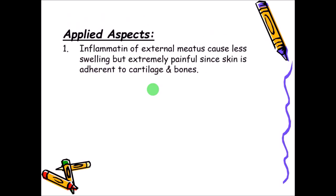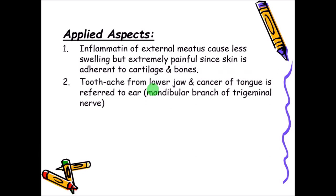Applied aspects: because the skin is totally adherent to the pinna and external acoustic meatus, any inflammation or infection causes only minimal swelling but severe pain. A second important applied aspect is referred toothache — especially pain from the lower jaw and cancer of the tongue can be referred to the ear through shared nerve supply.